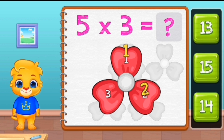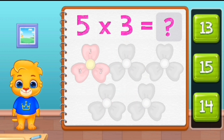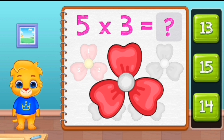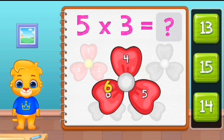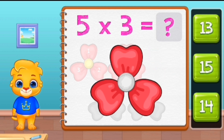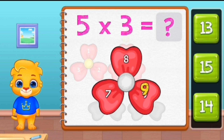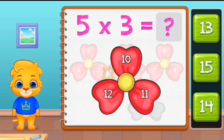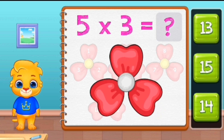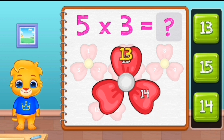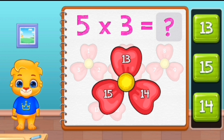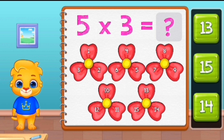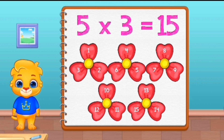One, two, three, four, five, six. Seven. Ten. Eleven. Thirteen. Fourteen. Fifteen. Fifteen. Five times three equals fifteen.